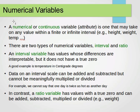A numerical or continuous variable, or attribute as we mentioned before, it can have different names, is one that may take on any value within a finite or infinite interval. We're talking about numbers here: height, weight, temperature, etc. We're talking about values which have real numbers or numbers in general.